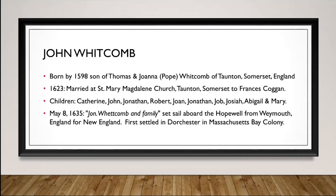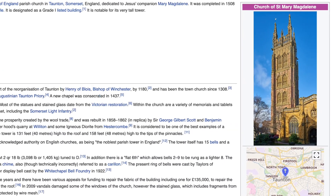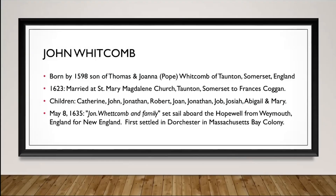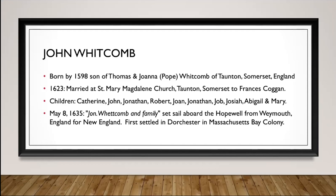What we know is that John was born by 1598 and was the son of Thomas and Joanna Pope Whitcomb of Taunton, Somerset, England. When he was about 25 years of age, he married at St. Mary Magdalene Church — that's in Taunton as well — to Francis Coggan. They had a large group of children, including first Catherine, born about 1624, right through Mary, who was born in New England about 1647. There are two Jonathans — the second Jonathan falls into the time frame when the family is now in New England. On May 8th, 1635, John Whitcomb and his family set sail aboard the Hopewell from Weymouth, England, and they land in New England and settle in Dorchester in Massachusetts Bay Colony.